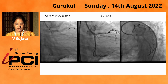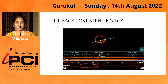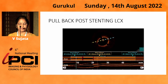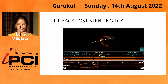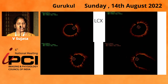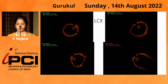This is the final result. On post-PCI pullback from the LCX, you can see the stent is well opposed and well expanded. We achieved very good lumen areas in the LCX: 8.7 and 8.6 mm².